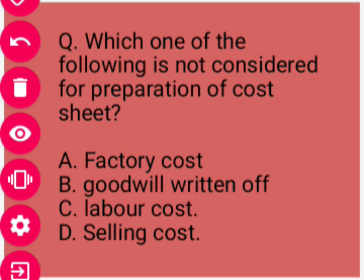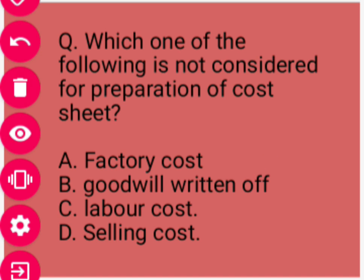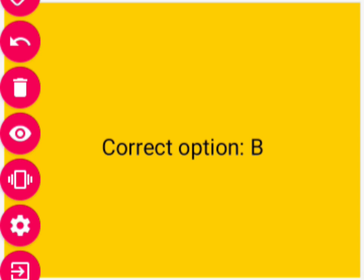Next: Which one of the following is not considered for preparation of the cost sheet? Options given: first, factory cost; second, goodwill; third, labor cost; fourth, selling cost. Cost sheet ke andar hum consider nahi karenge goodwill ko. Baaki sab — factory cost, labor cost aur selling cost — cost sheet mein include hote hain, except goodwill. Correct option hoga option B.